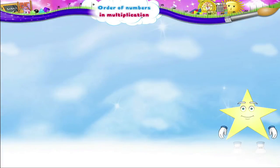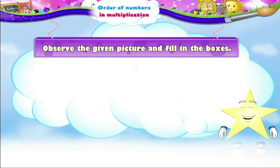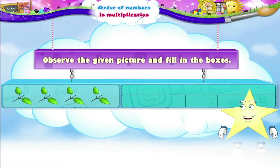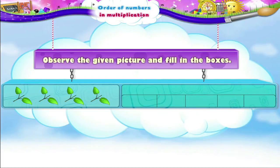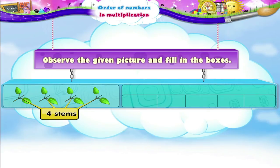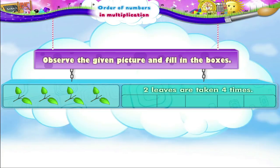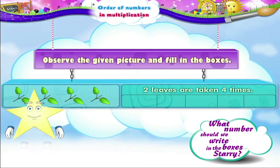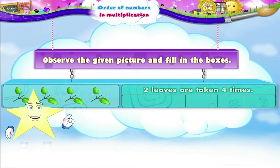Then observe the given picture and fill in the boxes. In the first picture, there are two leaves on a stem. There are four such stems. So two leaves are taken four times. Two into four equals eight.